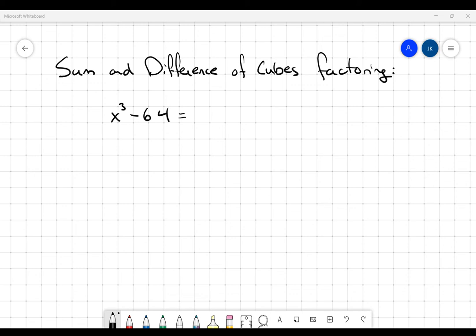So x cubed minus 64. And remember that 64 is going to be the same as 4 cubed.